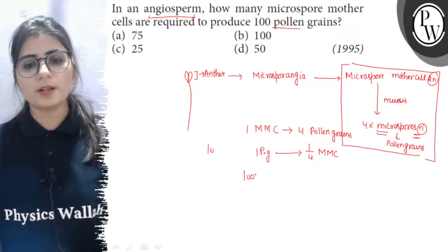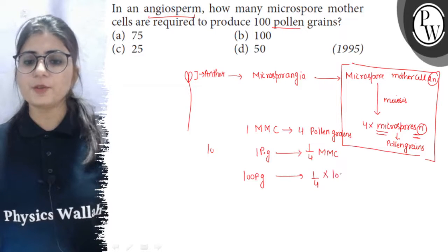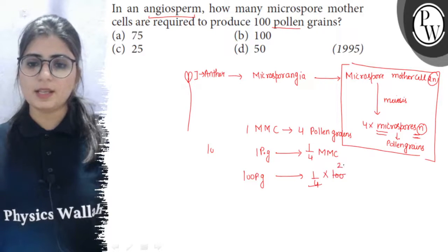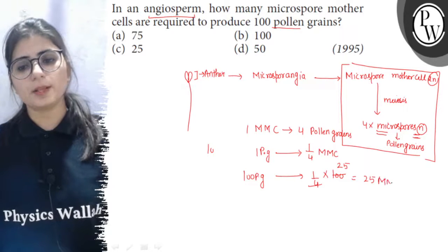So, 100 pollen grains will be produced by how many MMC? So, one by four into 100 it means these will be produced from 25 microspore mother cells.